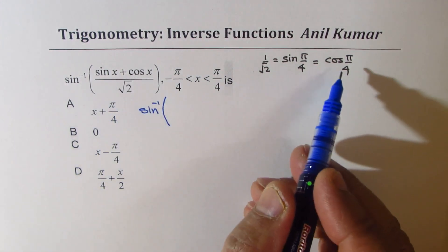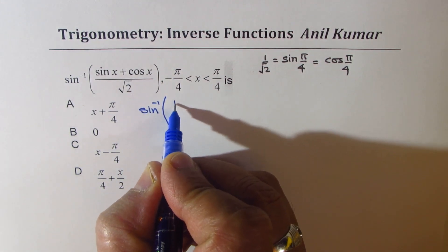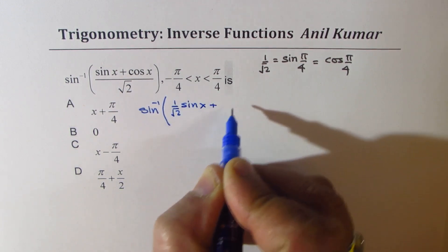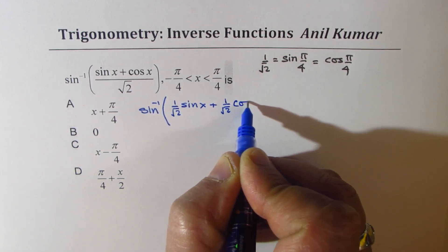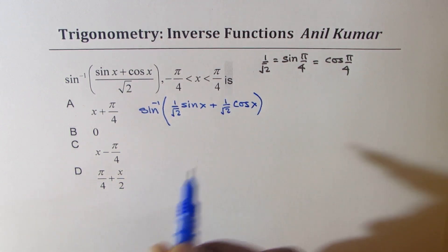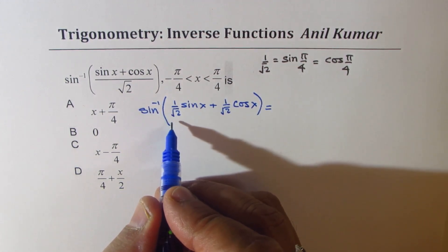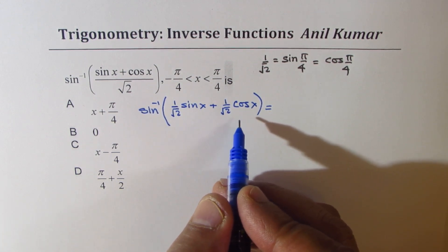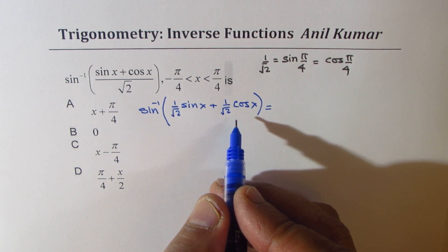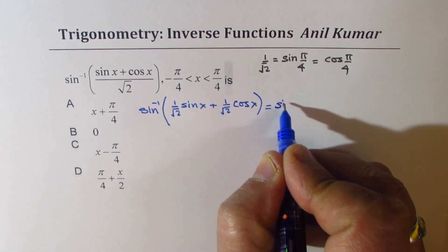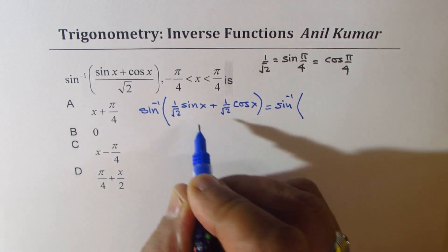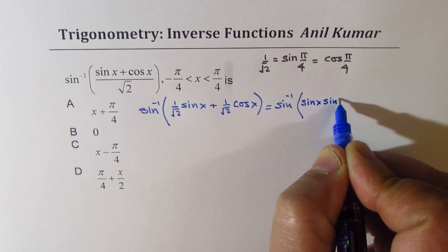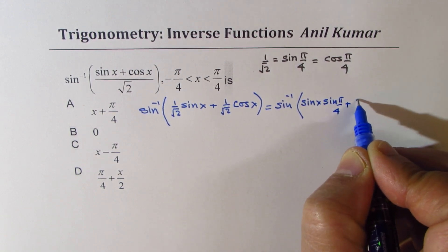So it becomes sine inverse of: (1/√2)·sin x + (1/√2)·cos x. I can write 1/√2 as cos(π/4), which gives me the compound angle formula for sine. So I write this as sine inverse of: sin x · sin(π/4) + cos x · cos(π/4).